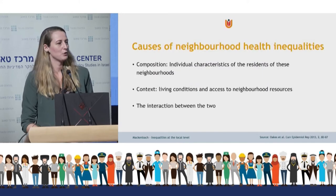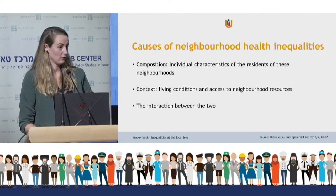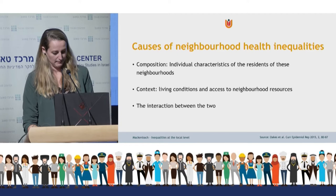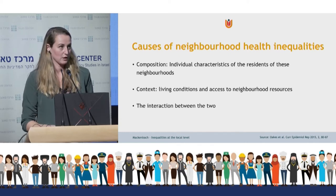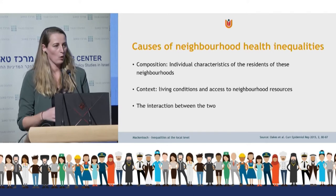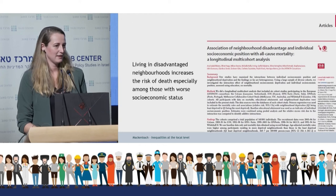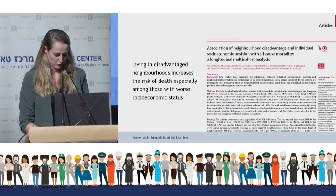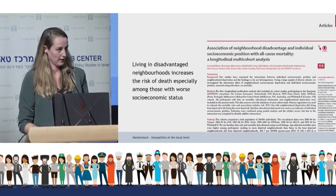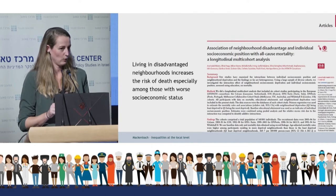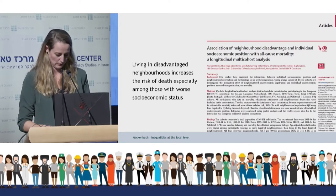Based on decades of research on neighborhoods and health, there are generally three explanations for health inequalities at the neighborhood level: compositional effects (characteristics of the people living there), contextual effects (resources and characteristics of the neighborhood itself), or a combination of both. A study led by Anna Ribeiro from the LifePath project demonstrated that the relative risk of all-cause mortality in the most versus least deprived areas was 1.3 for those with a low education level and 1.1 for those with a high education level, confirming this interaction between contextual and compositional effects.